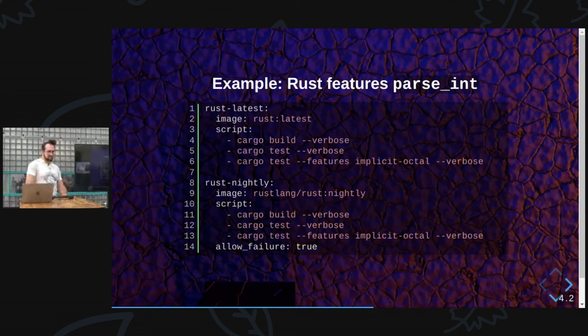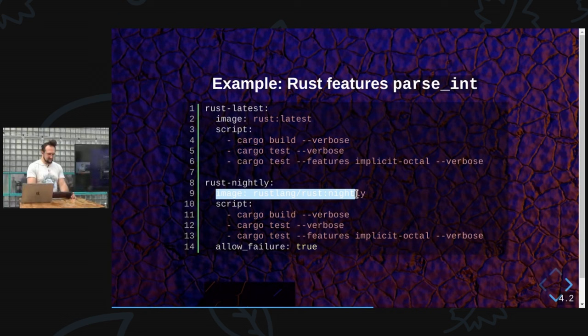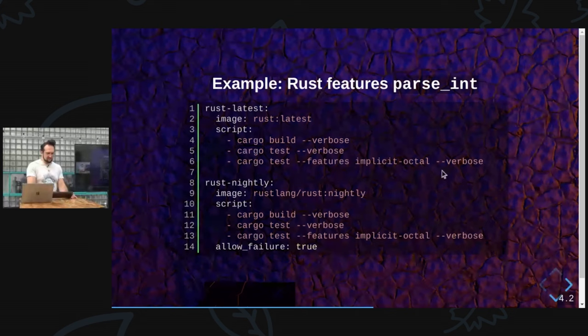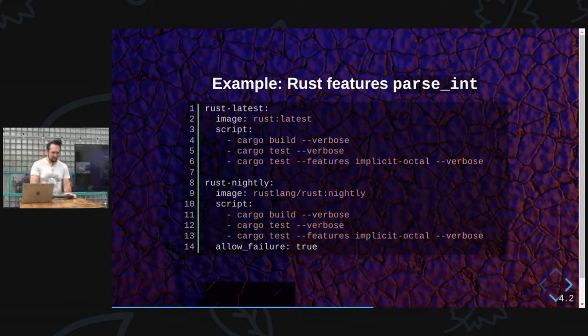Next example: parseint. Parseint is a little more complicated because we have features now, and we have nightly. The difference between nightly and not nightly is just the image line — you add the tag 'nightly' at the end. That's it, that's how we change images. For features, we just run the test without flags and with flags. It's not that hard and it's good to do.